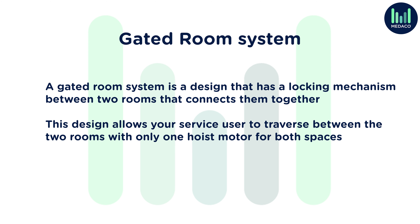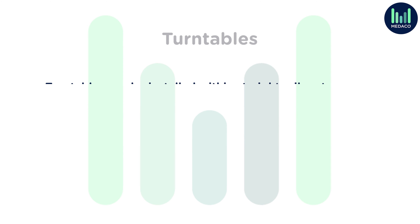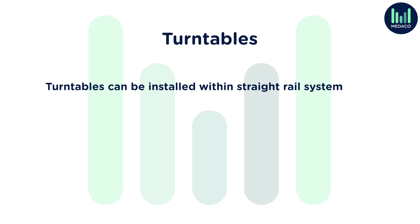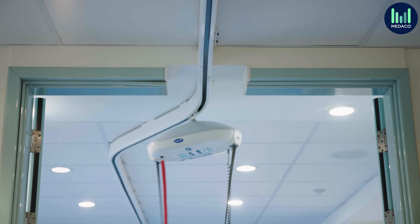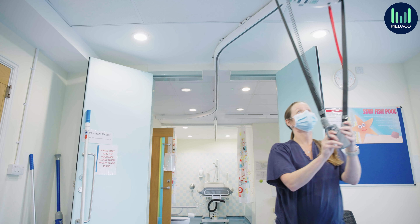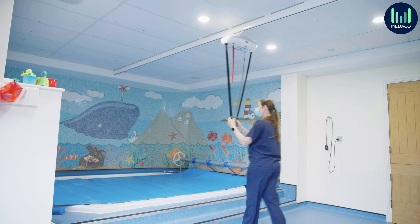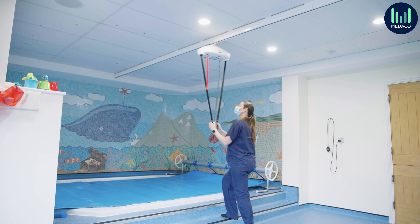Both the straight track and the XY systems have additional components that can be added into the design to accommodate a full range of movement options. A gated room system is a design that has a locking mechanism between two rooms, connecting them together to give a seamless transfer, allowing your service user to traverse between two rooms with only one hoist motor for both spaces. Turntables can also be installed within a straight rail system, enabling access to multiple rooms — for example, in a swimming pool changing area where one track goes over the pool and other tracks lead into different changing rooms, giving service users the option to access different areas.